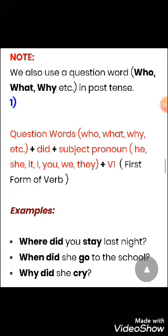When we use a question word such as who, what, why, etc. in any interrogative sentence, we use the question word first, then 'did', then the subject, then verb first form. For example: 'Where did you stay last night?' 'When did she go to the school?' 'Why did she cry?'